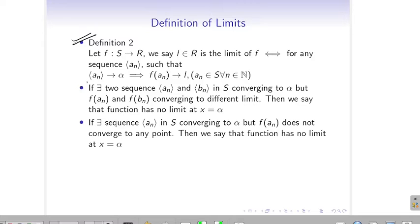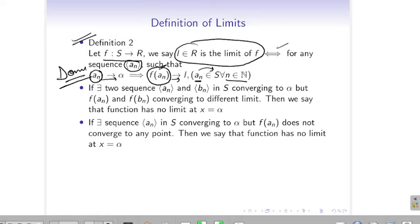Definition 2 defines the limit in another way. We say r is the limit of the function if and only if for any sequence, if the input value aₙ tends to α, then the overall function should tend to the limit l, where aₙ belongs to the domain and n belongs to the natural numbers. If aₙ converges to α but the output tends to l, then we say l is a limit.